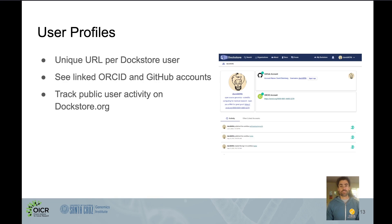We've also added a feature for user profiles. All DocStore users are now provided with a unique URL for their name, where you can see things like their linked accounts — for example, my GitHub account and ORCID account are visible here — as well as any public activity that is done across the site.